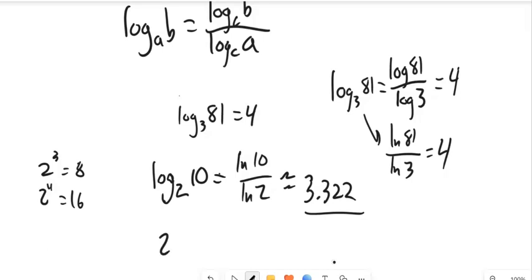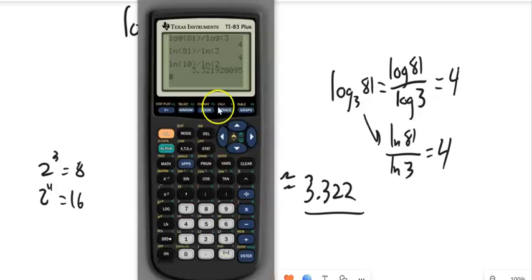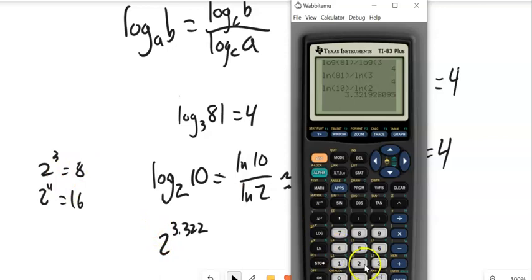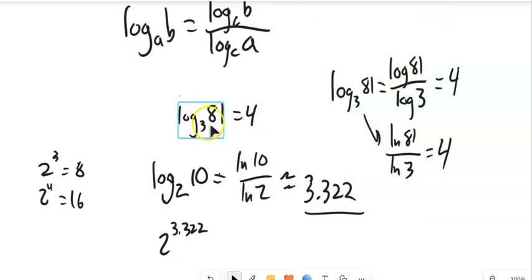To verify: 2 to the power of 3.322 — since I rounded, it should be a little bit bigger than 10, and indeed it is. The change of base formula is a wonderful thing — it lets you calculate any logarithm using your calculator. That's it for section 6.5. Let me know what questions you have, and good luck with the assignment.